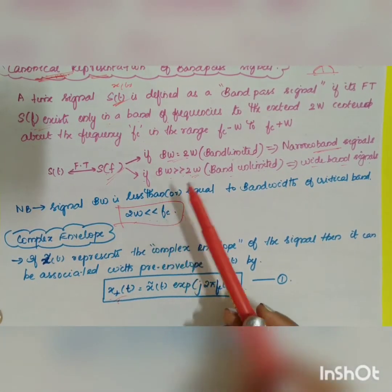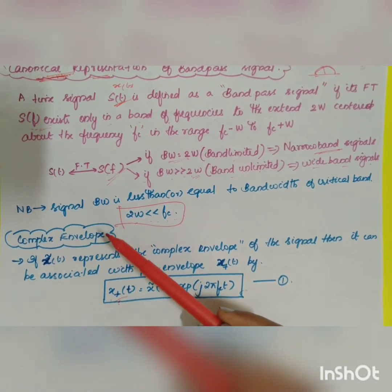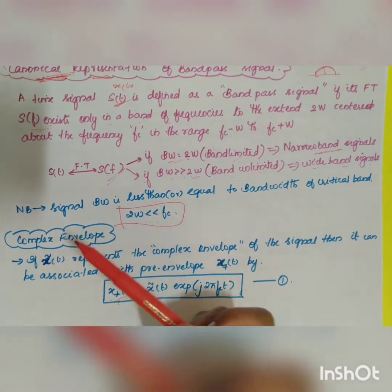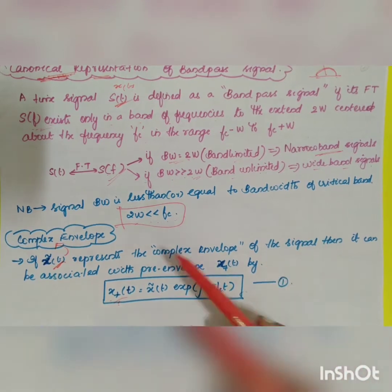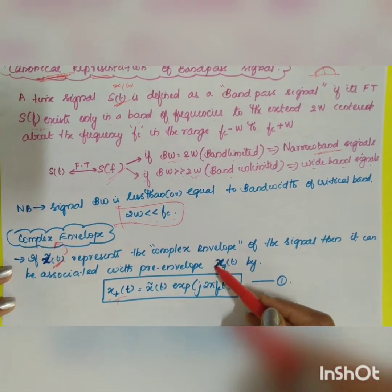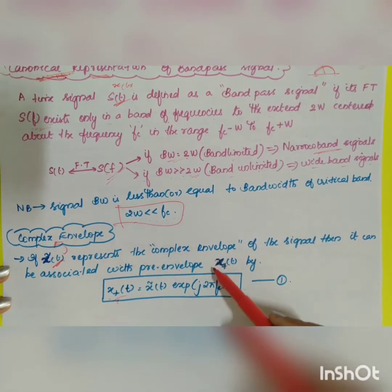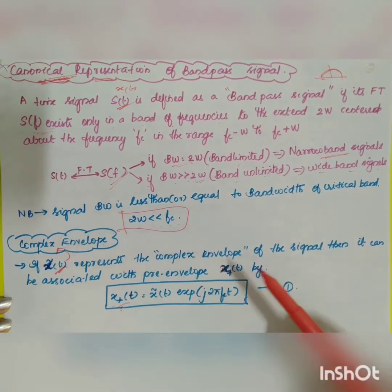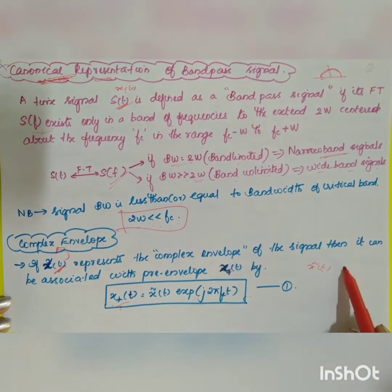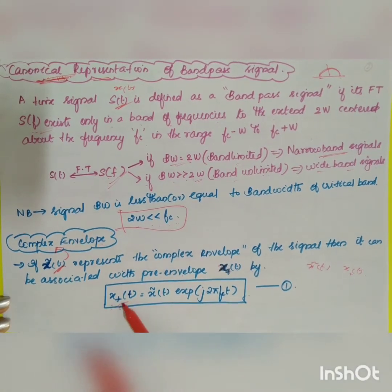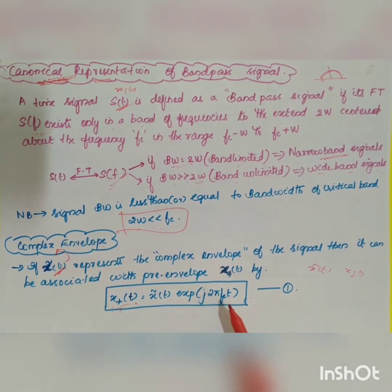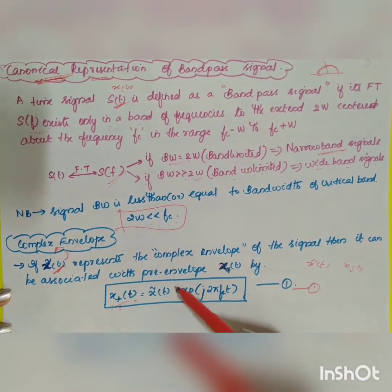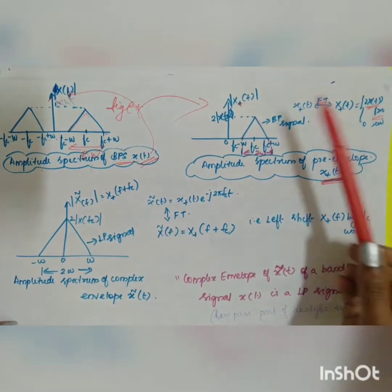Now we introduce the complex envelope. If x̃(t) represents the complex envelope of the signal, it is associated with the pre-envelope x⁺(t) by the relationship: x⁺(t) = x̃(t) · e^(j2πfc·t). This is equation one — a very important relationship.